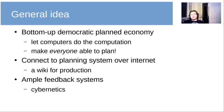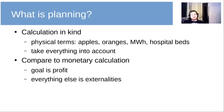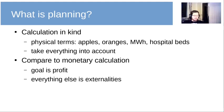So, planning. What is it? Planning is calculation in kind — it is calculation in physical terms. So, the number of apples, the number of oranges, the amount of electricity, the number of hospital beds, and so on. Planning makes it possible to take basically everything into account — everything that can be quantifiable, that is.